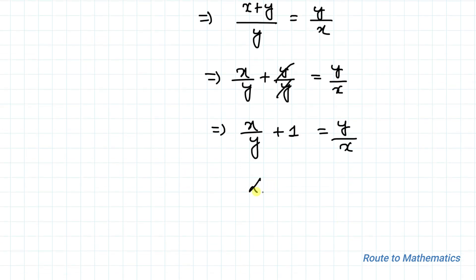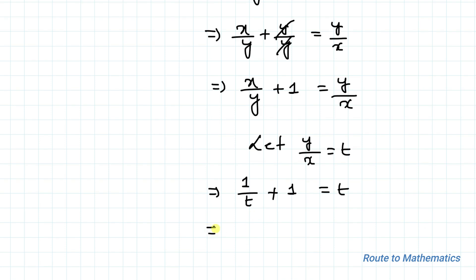Now let's take y/x = t. This becomes 1/t + 1 = t. Taking LCM, we have 1 + t = t². This implies t² - t - 1 = 0.